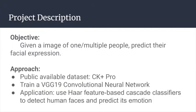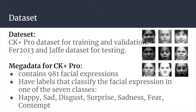Our project objective is to detect facial expressions when given an image of people. Our approach is to utilize a public CK Plus dataset and train a VGG neural network. Finally, we want to design an application to real-time detect a human face using Haar cascade classifiers and predict its emotion. We're using the CK Plus dataset for training and validation, and FER 2013 and Jaffe datasets for testing, which we will talk about later.